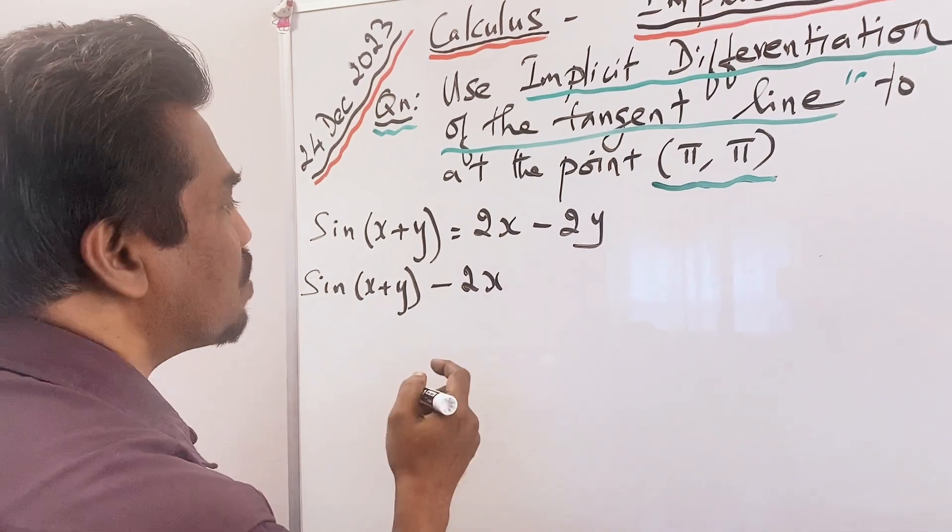Now we are close to the equation of the tangent. The tangent line is a straight line, so the general form is y = mx + b. We know m = 1/3, but we need to find b. Substituting y = π, m = 1/3, x = π: π = (1/3)π + b, so b = π − (1/3)π = (2/3)π.